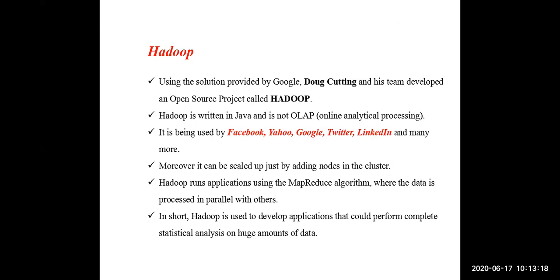Hadoop mainly contains two components. The first component is HDFS — Hadoop Distributed File System. The second component is MapReduce. There are two main components in Hadoop: HDFS and MapReduce. The concept of HDFS is similar to GFS. Hadoop Distributed File System is based on the concept of distributed file systems.